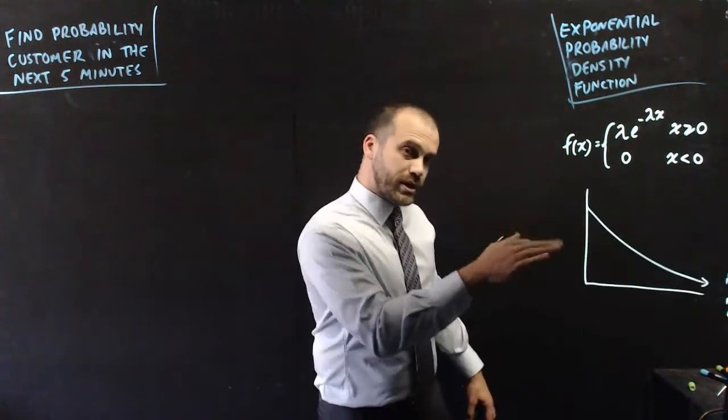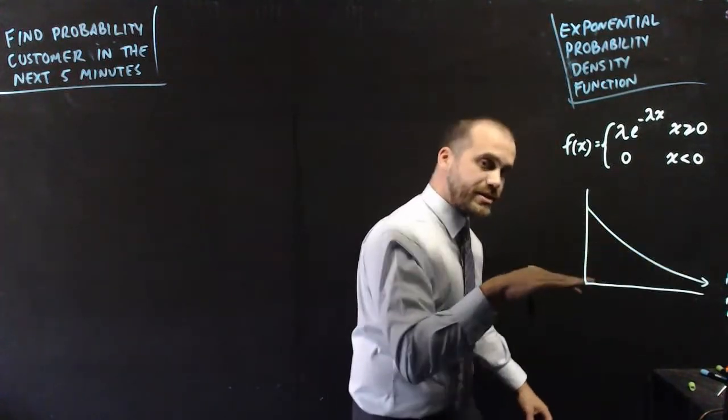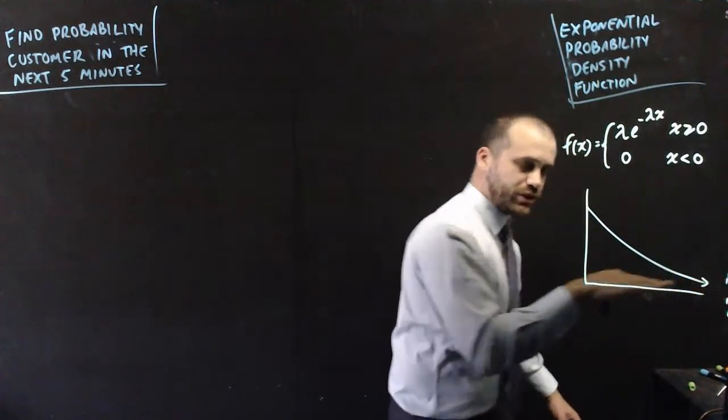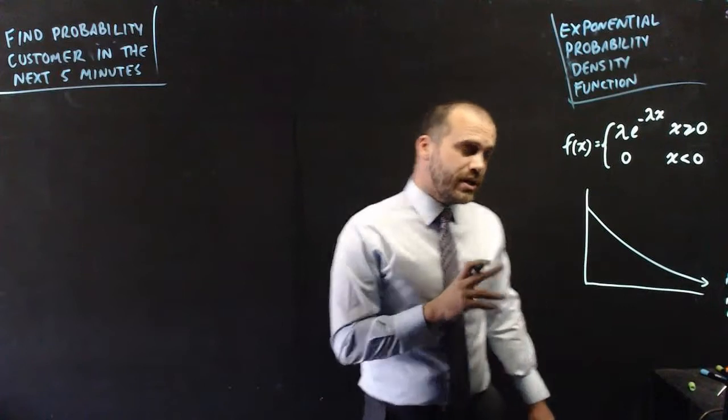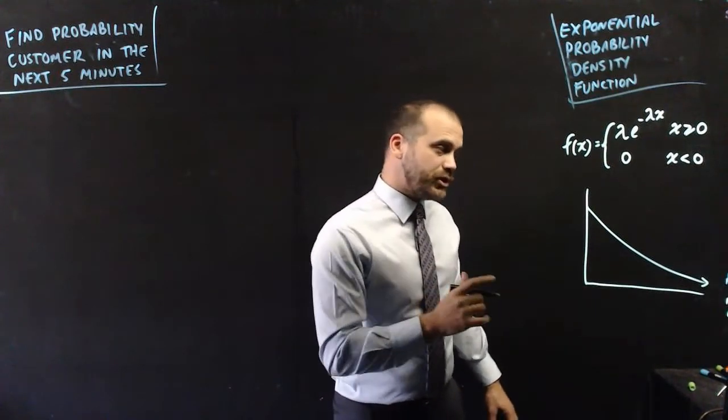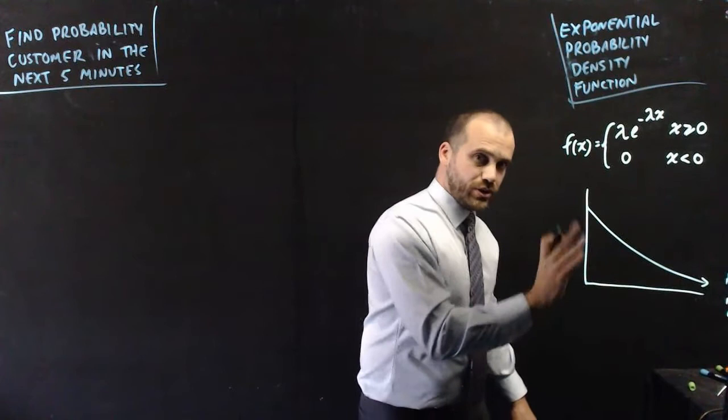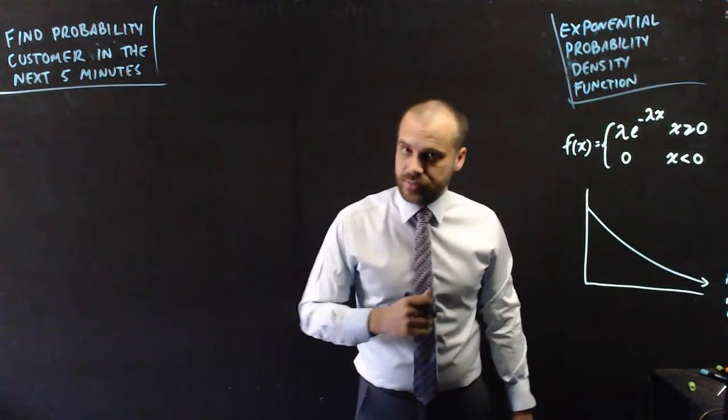Now, what does that look like? It looks like this, a decay curve, an asymptotic exponential function that's getting closer and closer to the x-axis, but never quite touching it. And you should already know when it comes to probability density functions, the area under the curve tells you the probability of something happening.